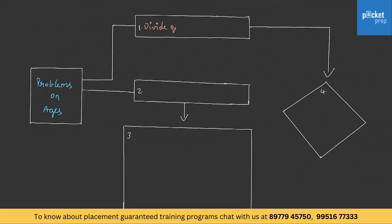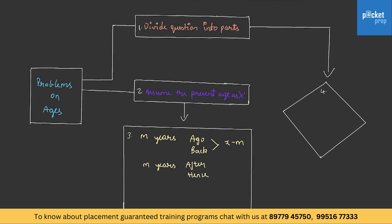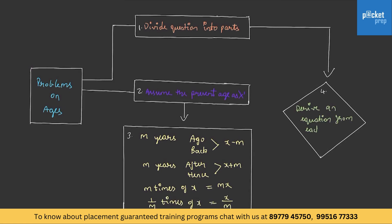That is it. Let us have a glance at the standard format or steps to solve these problems again. Firstly, divide the question into parts. Then assume the present age as x. m years ago or back will be x minus m; m years after or hence will be x plus m; m times of x will be mx and 1 by m times of x will be x by m. Finally, derive an equation from each divided part to find the solution.